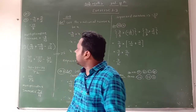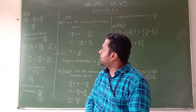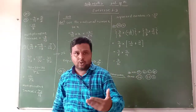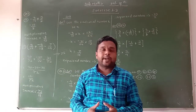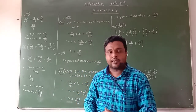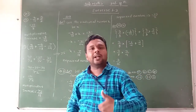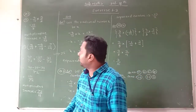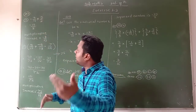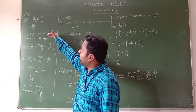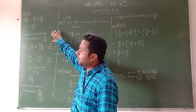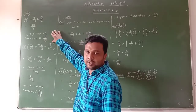Now we have to find out its multiplicative inverse. Therefore, its multiplicative inverse — we know how to find the multiplicative inverse of a rational number by taking the reciprocal. Therefore, the reciprocal of minus 15 upon 8 is minus 8 upon 15. And that is its multiplicative inverse.